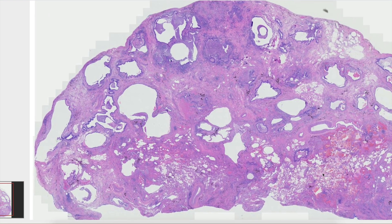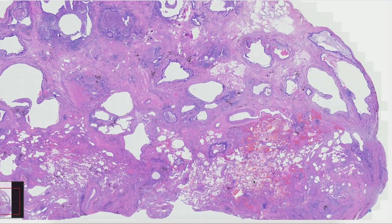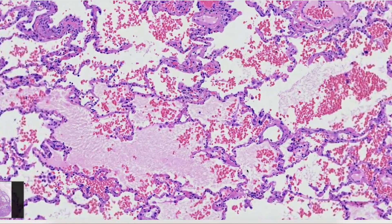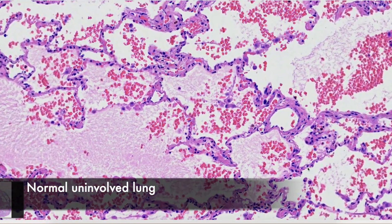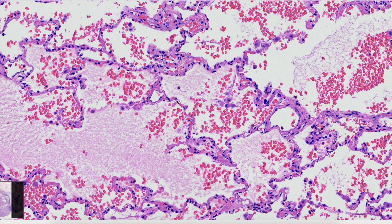Zooming into a bit higher power on the normal lung for comparison, we see architecturally normal lung with thin alveolar septae lined by pneumocytes and thin capillaries running through them. This is a site where efficient gas exchange happens.